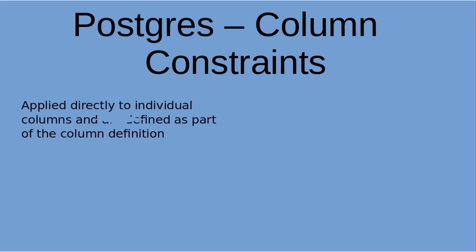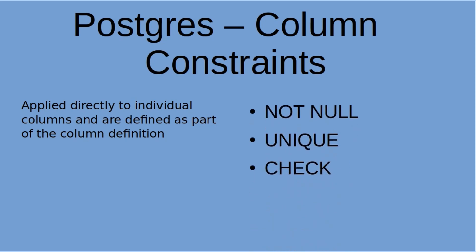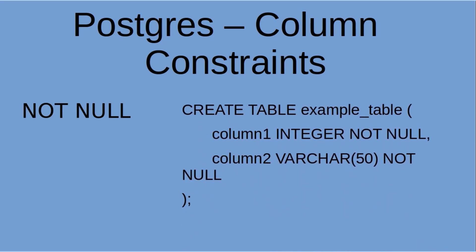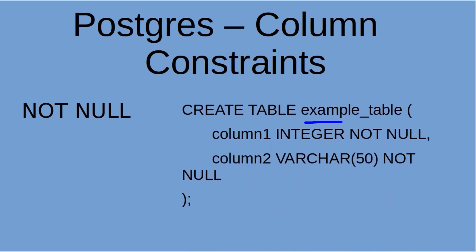Now we move into column constraints. Column constraints are applied directly to individual columns and are defined as part of the column definition. Let's look at a few examples: NOT NULL, UNIQUE, and CHECK. NOT NULL ensures that a column cannot contain null values. Here we have the table with a column defined as INTEGER NOT NULL, and column two as VARCHAR(50) also NOT NULL.